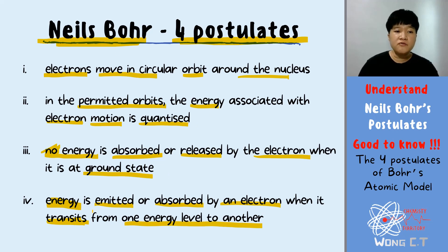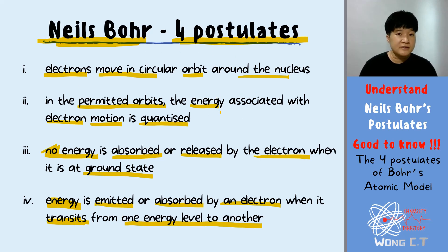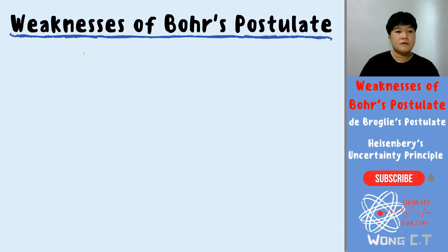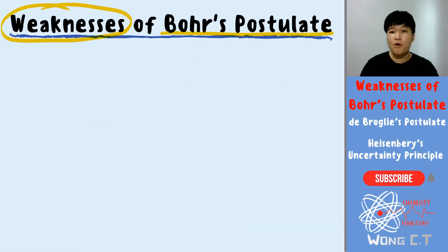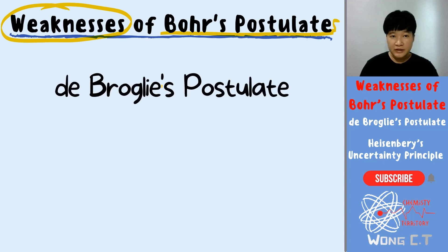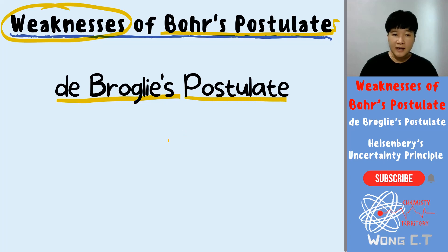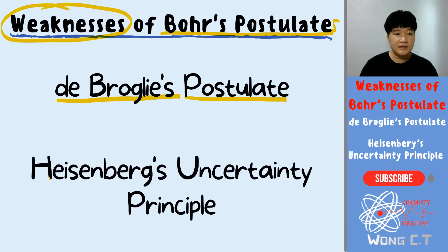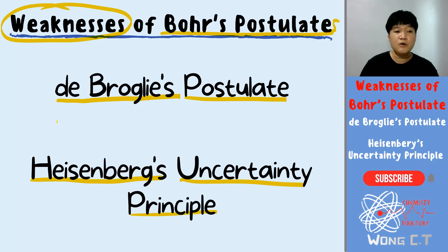We have talked about these four postulates in previous videos, but there are some weaknesses in them. The first weakness is pointed out by de Broglie's postulate, and the second weakness is proposed by Heisenberg's uncertainty principle, and we will go through them one by one.